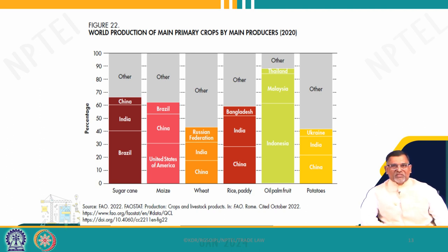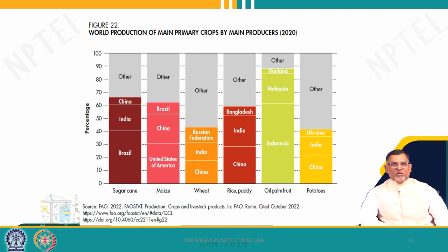Sugar alone — 40 percent of world production — is produced by one developing country, Brazil, not by developed countries. For maize, the number one producer is the United States, then China, then Brazil, with others constituting around 40 percent. These three countries together constitute around 60 percent of the maize produced. Around 60 percent of wheat is produced by all other countries combined, while three countries — China, India and Russia — produce 40 percent of the wheat. The largest producers of wheat in the world are China, India and Russia.